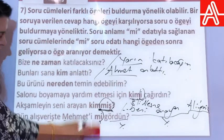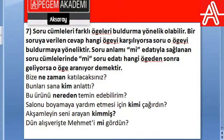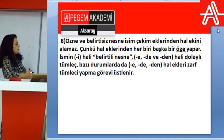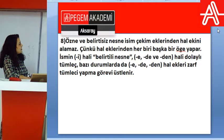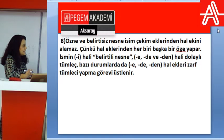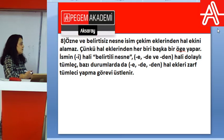Son kural: özne ve belirtisiz nesne hal eklerini kesinlikle almaz. İsmin i halini görüyorsak belirtili nesne, e, de, den halini görüyorsak dolaylı tümleç aklımıza gelecek. Bu ekler bazen zarf tümleci de yapabilir; istisnalarını söyleyeceğim.